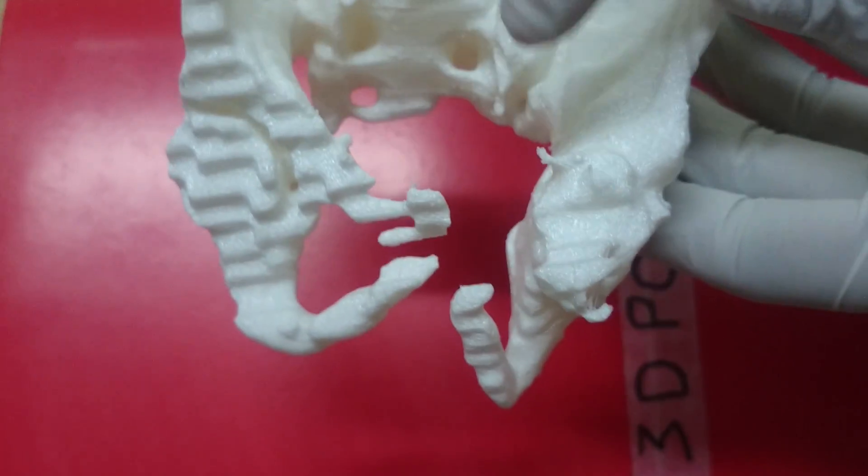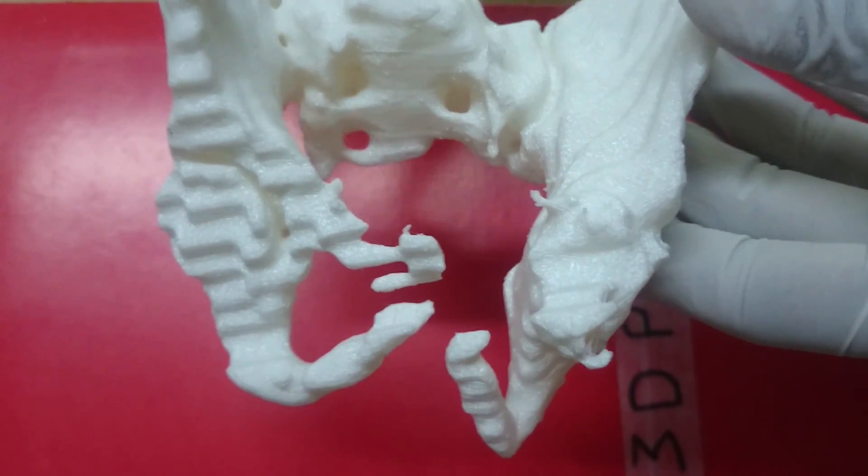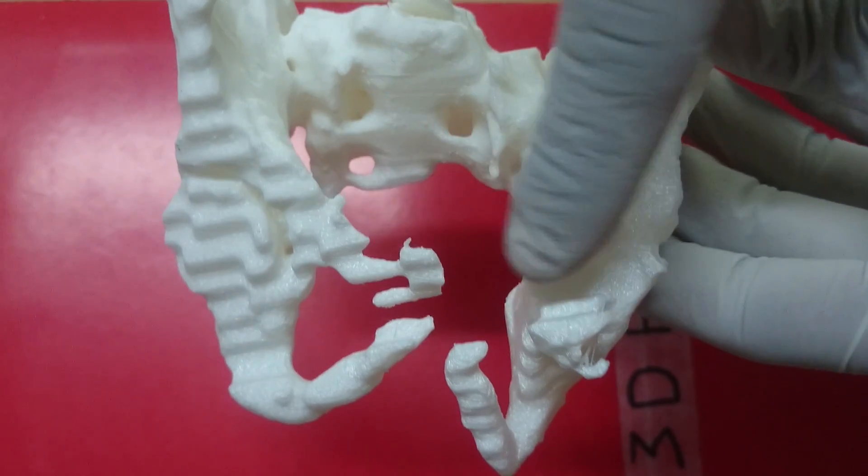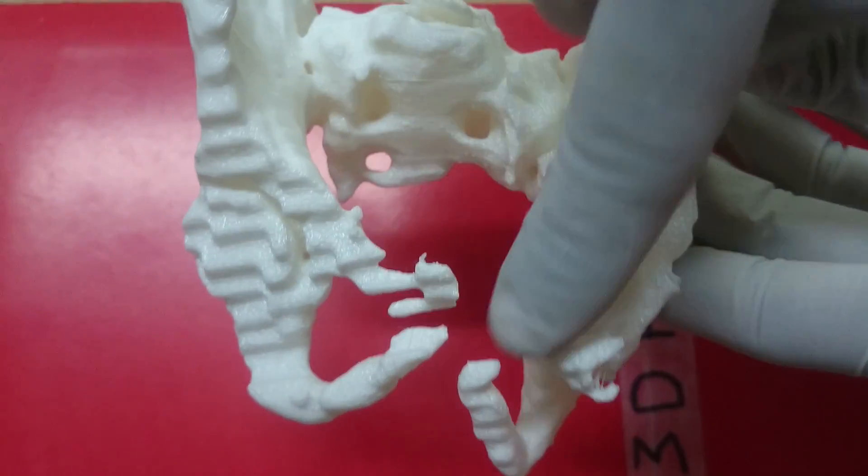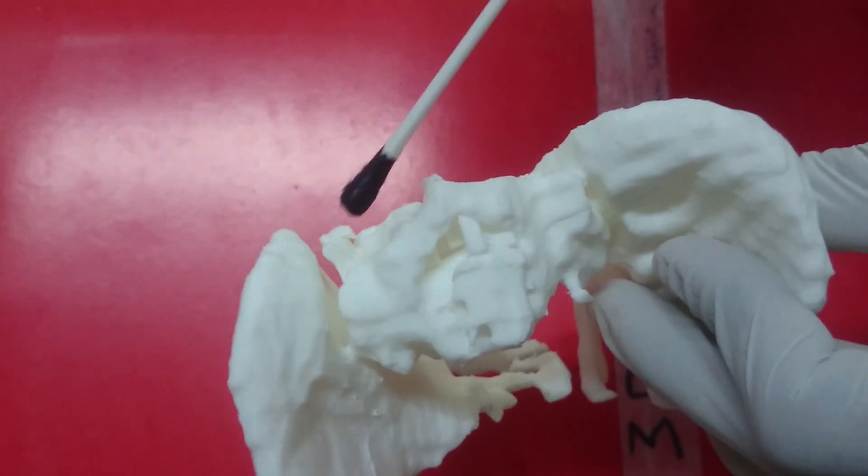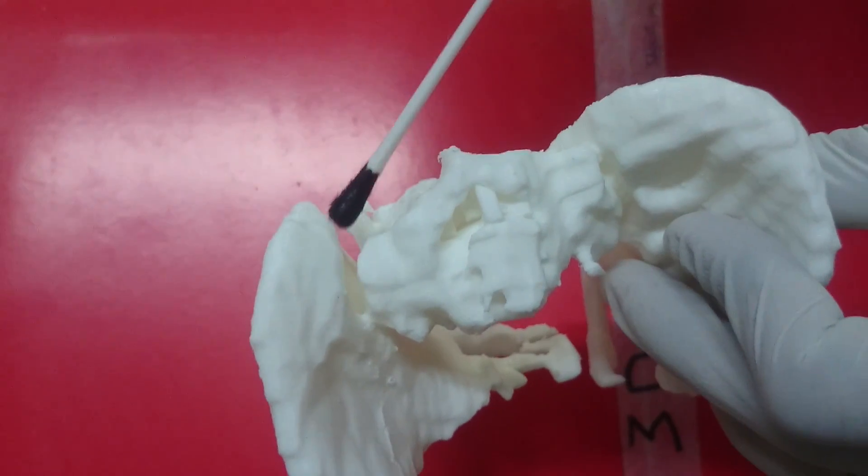You can have a look at the nature of injury that the boy suffered. It's an anterior posterior compression type of injury and there is a disruption of the pelvic ring, both anteriorly as well as posteriorly. You can have a look at how this posterior SI joint is disrupted on this side.